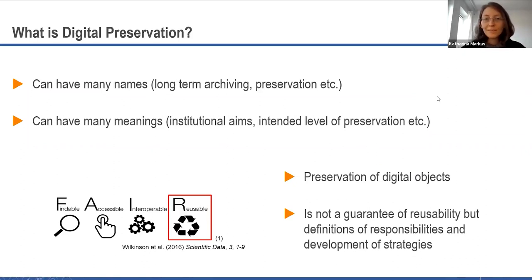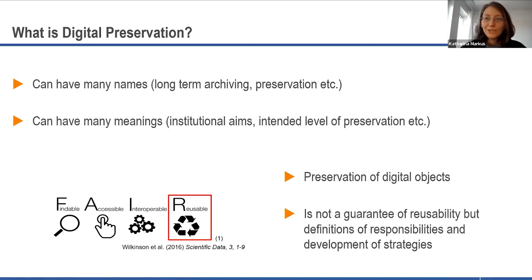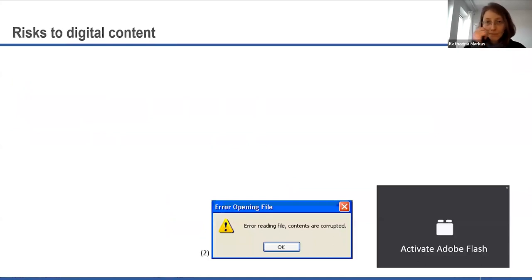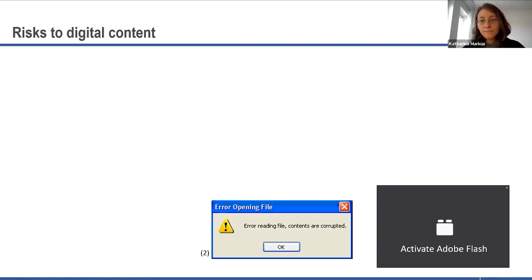In general, we want to preserve digital objects. At a high level this can align with the usability of the FAIR data principles, but it is not a guarantee of usability. It is a definition of responsibilities and development of strategies, because we don't know what the future holds. We can't guarantee that you will be able to reuse an object in 50 or 100 years. Extrapolating from experiences where digital content was lost helps us understand the respective risks.